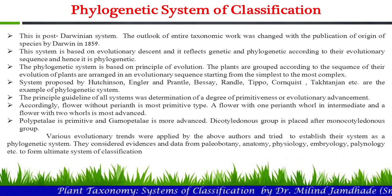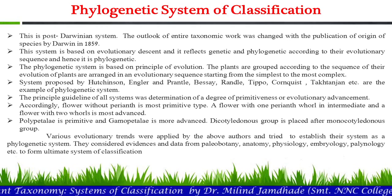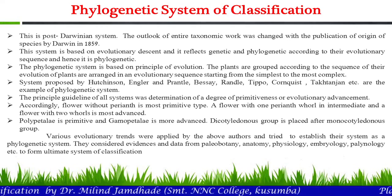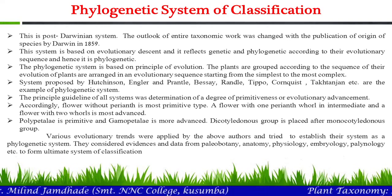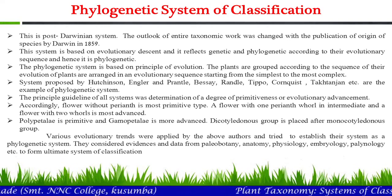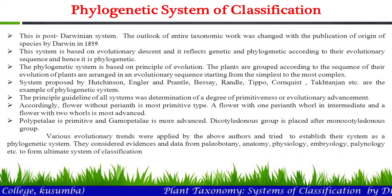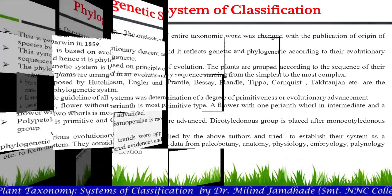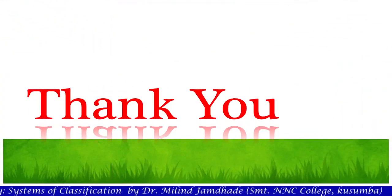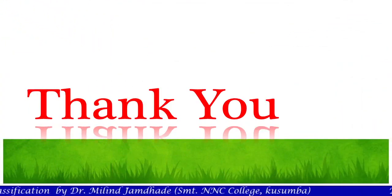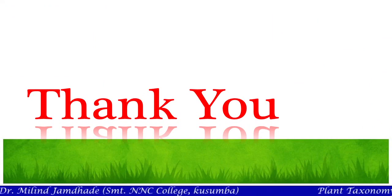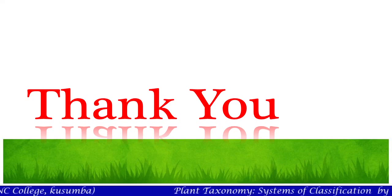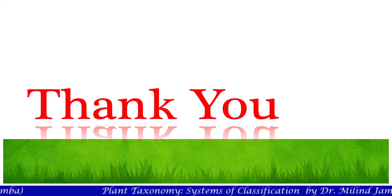They considered evidence and data from paleobotany, anatomy, physiology, embryology, palynology, etc., to form an ultimate system of classification. So in the next video, we are going to discuss the outline of the Bentham and Hooker system up to the series level and also discuss its merits and demerits. Thank you.